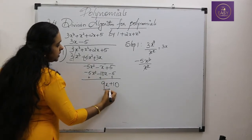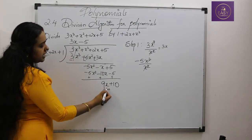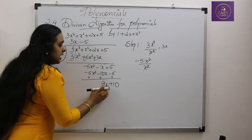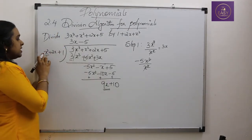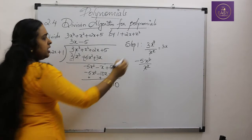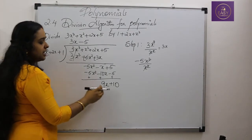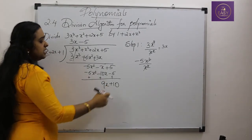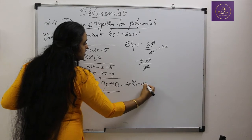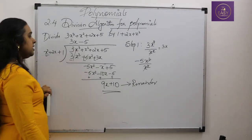Now we check the first term of our new remainder: 9x + 10. The first term is 9x, which has degree 1, while the divisor x² + 2x + 1 has degree 2. The power of the divisor is higher than the power of the dividend, so we cannot perform any further steps. Therefore, 9x + 10 is our remainder.